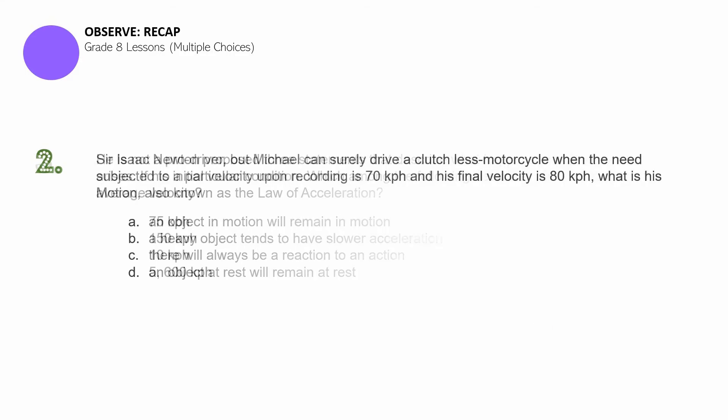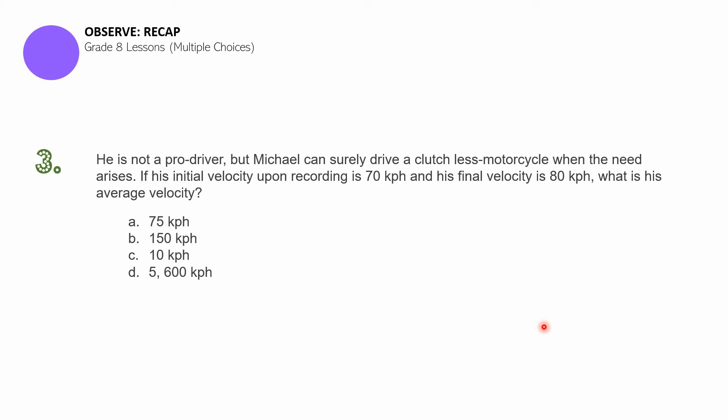Question number three. He is not a pro driver, but Michael can surely drive a clutchless motorcycle when the need arises. If his initial velocity upon recording is 70 kilometers per hour and his final velocity is 80 kilometers per hour, what was his average velocity? A. 75 kilometers per hour. B. 150 kilometers per hour. C. 10 kilometers per hour. D. 5,600 kilometers per hour.